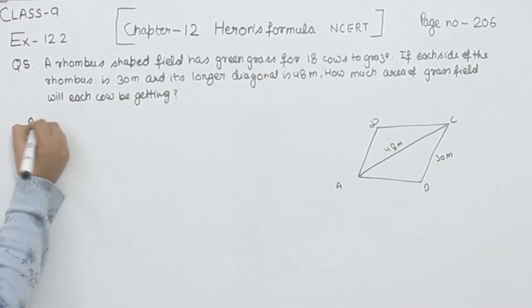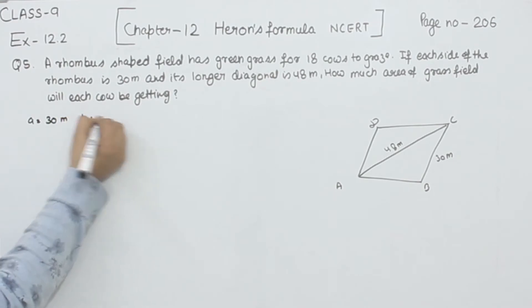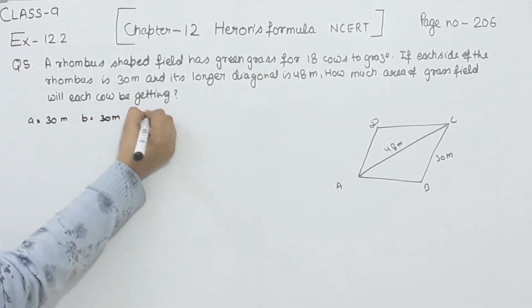So the sides we are having: A is equal to 30 meters, B is equal to 30 meters, and C we are having as 48 meters.